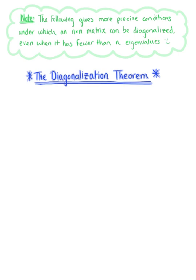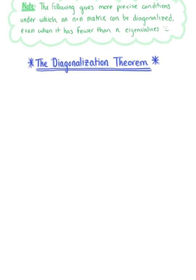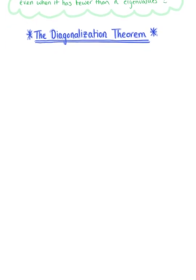The final theorem of this section provides an important result that characterizes diagonalizable matrices in terms of the two notions of multiplicity — algebraic and geometric — that we've reviewed in this section. This theorem gives precise conditions under which an n by n matrix can be diagonalized even when it has fewer than n eigenvalues. So here we go: the diagonalization theorem.